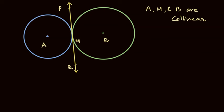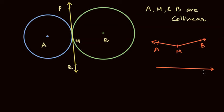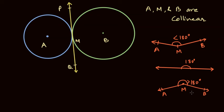Let us analyze this situation. If we join AM and BM, and if A, M, B are not collinear, they do not lie on a single line. A property of collinearity is that any angle formed on the line should be 180 degrees. But if they are not collinear, this angle will be less than 180 degrees — or in another configuration, greater than 180 degrees. So if we can show the angle is exactly 180 degrees, we can confirm the points are on a single line.